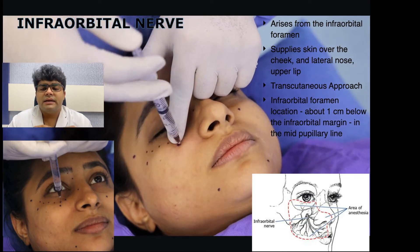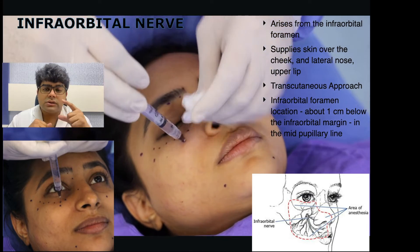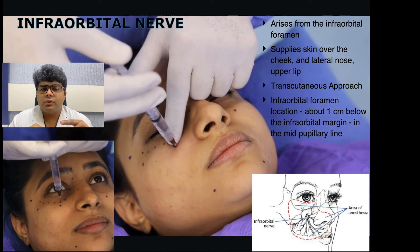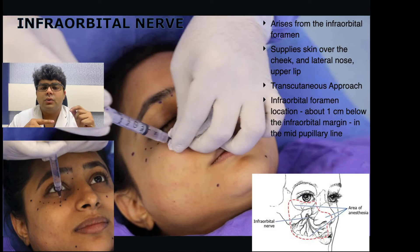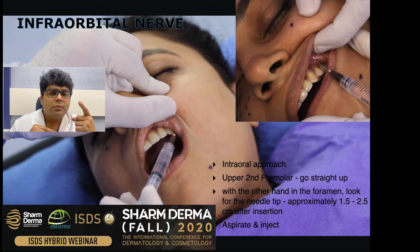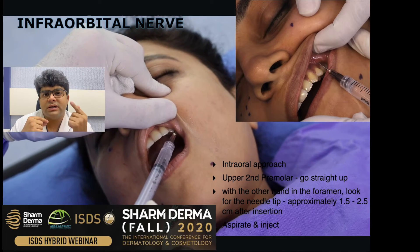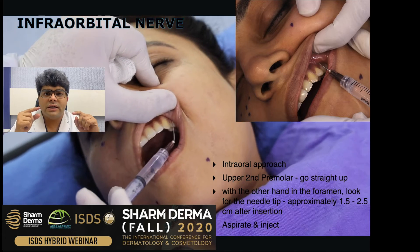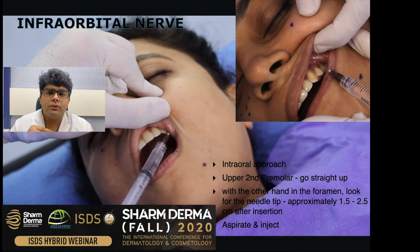The infraorbital nerve innervates the upper lip, the medial cheek, the nasolabial fold, the ala of the nose, the lateral ala, and the inferior eyelid — all anesthetized by blocking this nerve. There are two approaches. The transcutaneous approach: in the mid-pupillary line, about one centimeter below the infraorbital margin is where the infraorbital foramen lies — we go in, palpate, aspirate, and inject. The transoral approach: go straight up from the second premolar tooth in the mid-pupillary line, with the other finger near the infraorbital foramen to feel for the needle tip, then infiltrate one to two cc's of anesthesia.